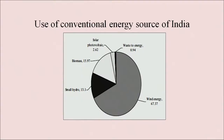The uses of conventional energy sources in India, as you can see in the diagram, include solar photovoltaic use, waste energy, wind energy, biomass and hydro powers, as discussed earlier. So first of all we will start with biomass.